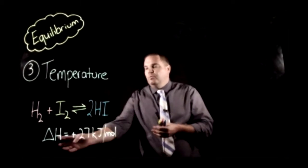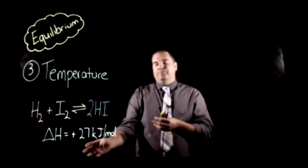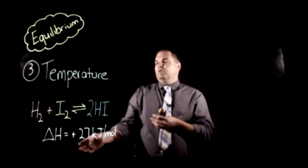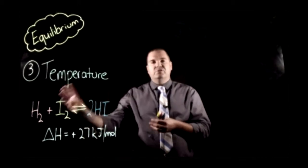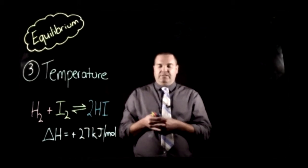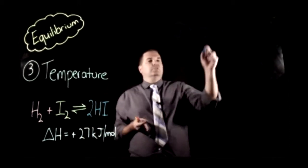So if we increase the temperature, we're going to favour the forward reaction which is endothermic. If we decrease the temperature, the back reaction which is exothermic is actually going to be favoured instead. So let's draw up a graph and see what it looks like.